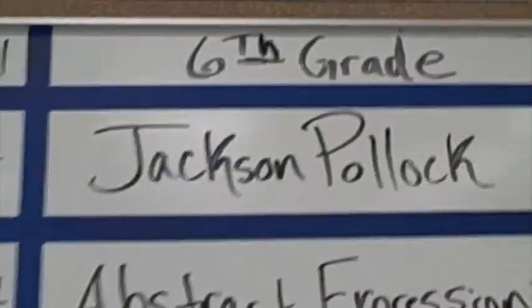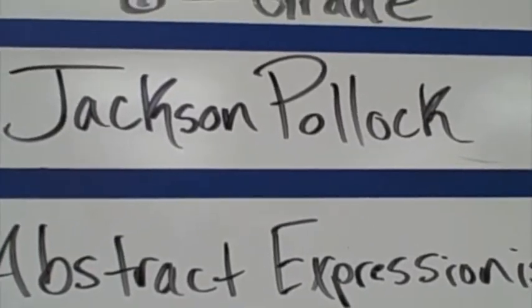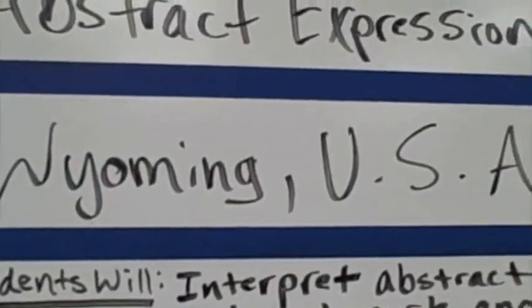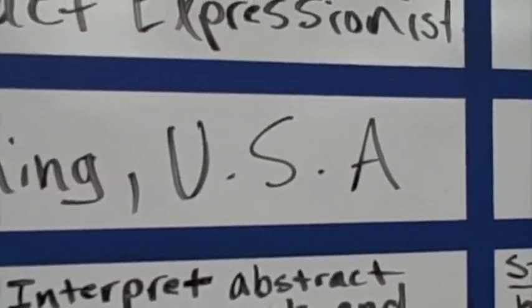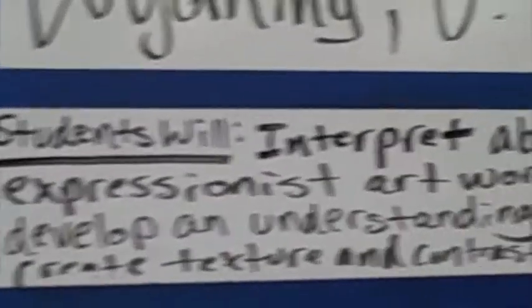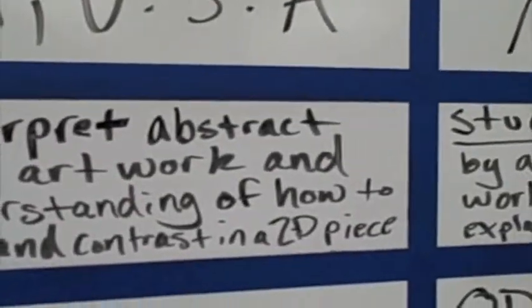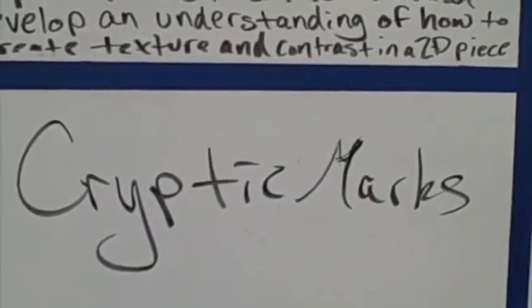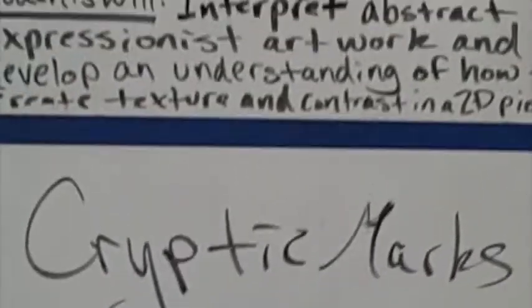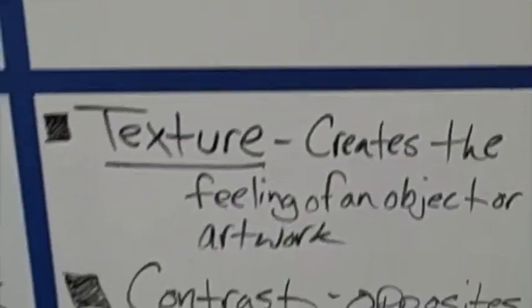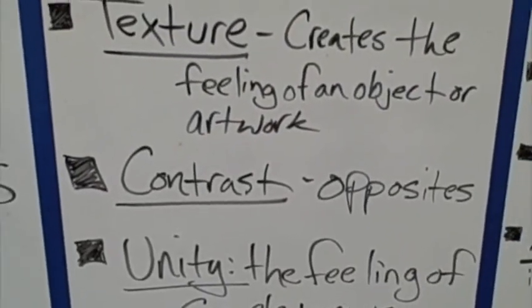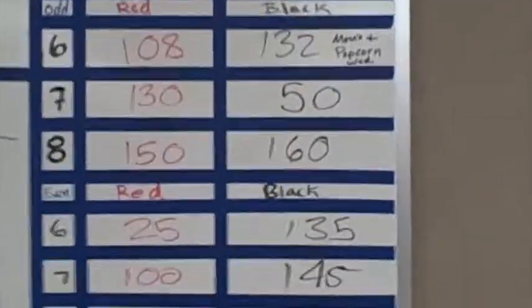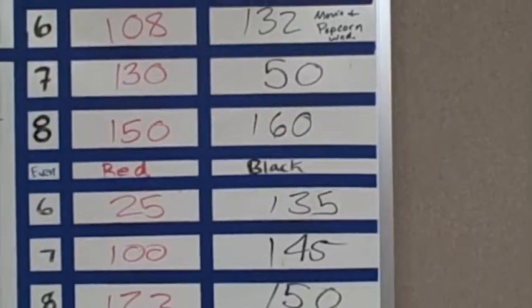Right now you can see we're talking about Jackson Pollock — he's an abstract expressionist from Wyoming, so the nationality is USA. Students will be doing what I call cryptic marks, which is what I focus on with Jackson Pollock, along with the terms we're working on.